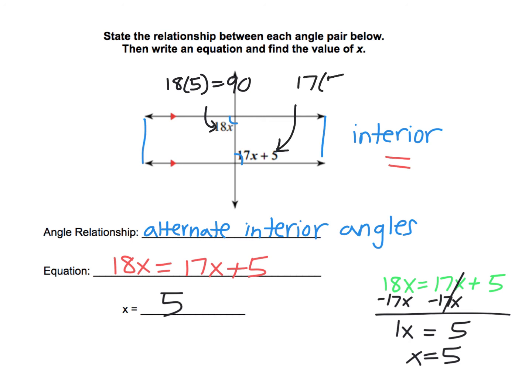So I would do 17 times 5. 17 times 5 is 85. And 85 plus 5 is also equal to 90 degrees. So the checking is optional, but it's kind of nice just to verify that we solved it correctly. x is equal to 5.